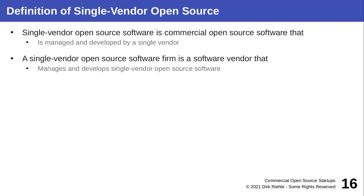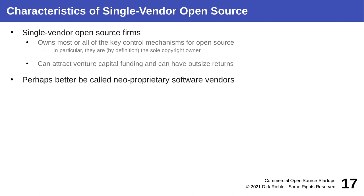They position themselves, manage the trademarks, and are often synonymous with the software. For example, the MySQL database was developed by MySQL AB — a company of the same name. The intellectual property is owned by that single vendor and they do not share or allow broad participation in the IP. Single vendor open source firms own all control mechanisms: the copyright, maybe patents, certainly trademarks, and since they started it all, they will most likely also own all relevant domains and communication channels tied to the name of the open source software.